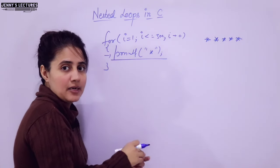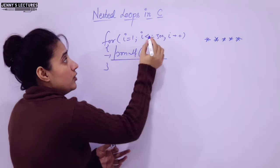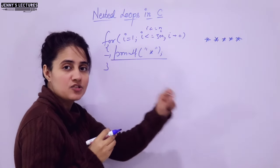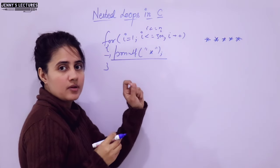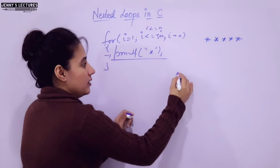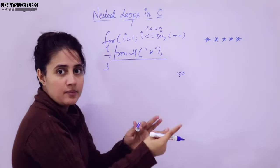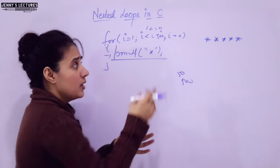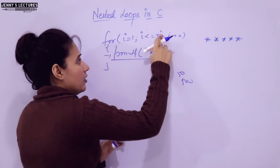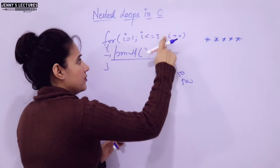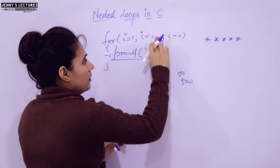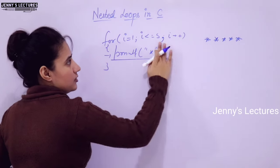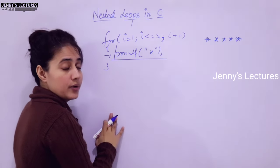Another method is to write i <= n, and at runtime ask the user to enter the value of n. If you enter 50, it repeats 50 times; if you enter 500, it repeats 500 times. But here, suppose I am doing hard coding and simply writing 5. Now using this loop, you can print this. I have used a loop here. Now I want to print these stars in multiple lines.